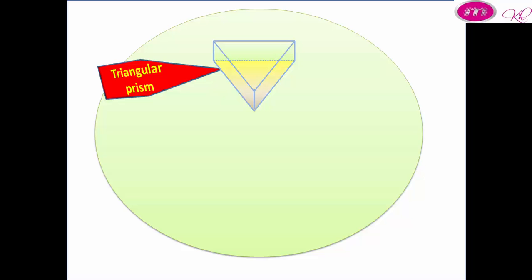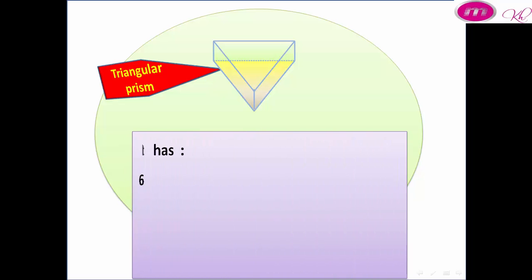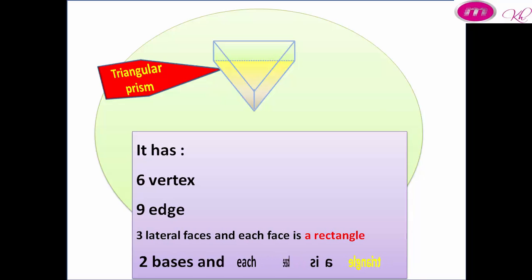Triangular prism. It has 6 vertices, 9 edges, 3 lateral faces and each face is a rectangle, 2 bases and each base is a triangle.